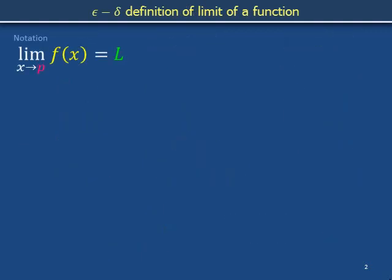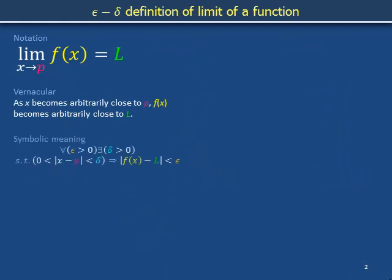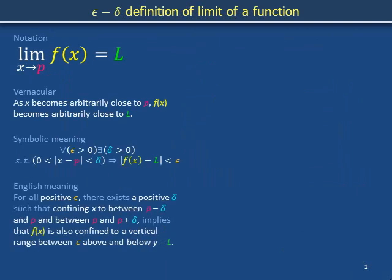We read this notation as: the limit as x goes to p of f of x is l. It means that as x becomes arbitrarily close to p, f of x becomes arbitrarily close to l. Mathematical notes are sometimes written in shorthand. The upside-down A is read 'for all.' The backwards E is pronounced 'there exists.' The s.t. is short for 'such that,' and the double-struck arrow is short for 'implies.'